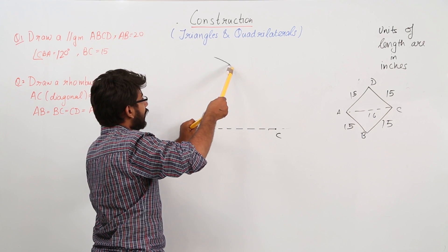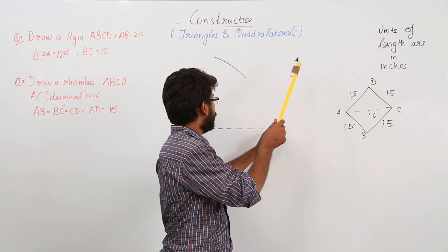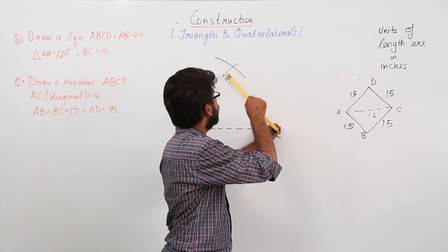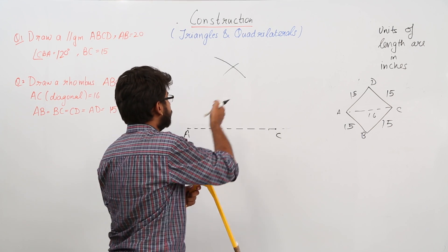Now you also know CD is also equal to 15, so place it over here and draw an arc. So you have one point, this vertex is D.